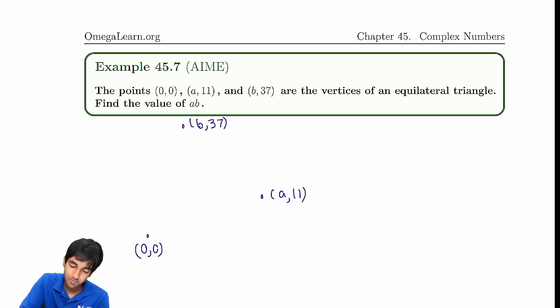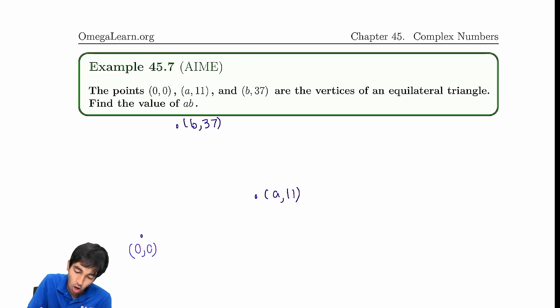Here's a slick solution. Let's put this all into the complex plane. This becomes 0, this becomes a plus 11i, and this becomes b plus 37i. Now, because this angle is 60, we can use rotation, complex number rotation.